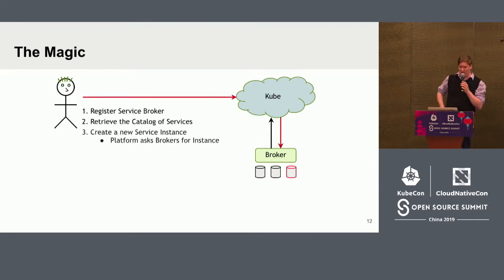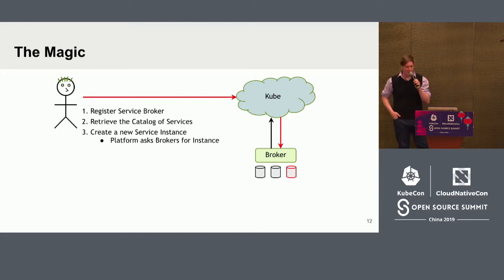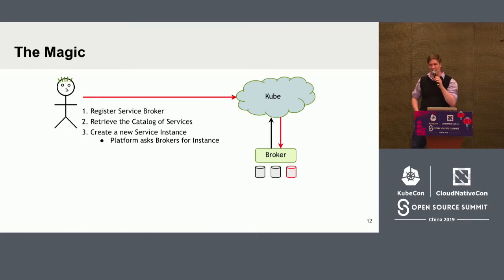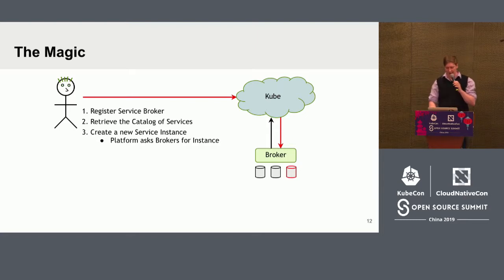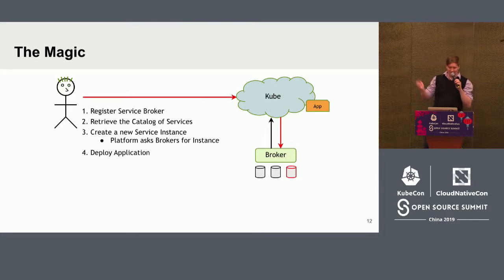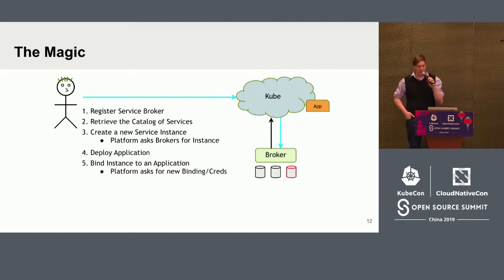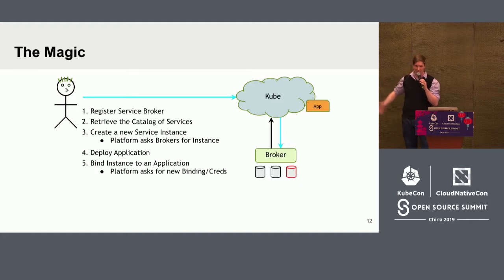At some later point, a user comes along and sees the services available on Service Catalog and wants to provision an instance. They do this by creating a new Service Instance object. Catalog goes to the broker and says: create me a new MySQL database of class MySQL, plan 100 megabytes. The broker does whatever it needs to do to make that happen — Service Catalog doesn't really need to know or care. That user then deploys an application that needs to consume the service and creates a binding by creating a Service Binding object in Service Catalog, which forwards the request to the broker saying: create a binding to that instance you already have provisioned.